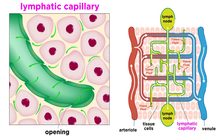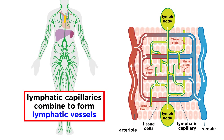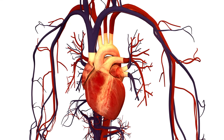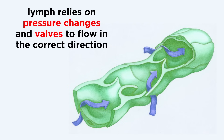Interstitial fluid, along with various other components, will enter lymphatic capillaries. From there, these combine to form larger lymphatic vessels, just like veins do. These also combine to form lymphatic trunks, which drain various parts of the body and are named after the region they drain. While blood circulates due to the capacity of the heart to act like a pump, the lymphatic system has no such pump. Instead, lymph relies on pressure changes and valves to flow in the correct direction, and lymph flow is stronger during physical activity.